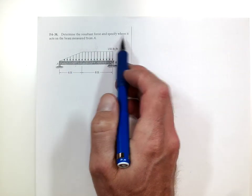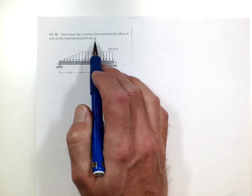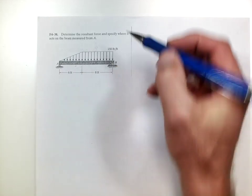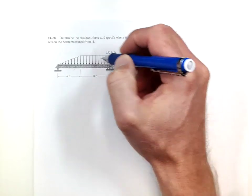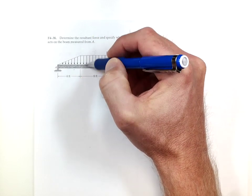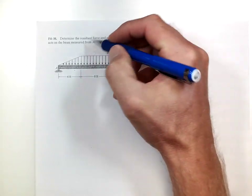Determine the resultant force and specify where X on the beam measured from A. We have the distributed load here and the sum of that load will act at a certain point. So to find that point,